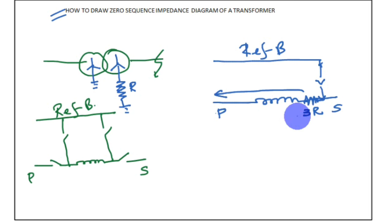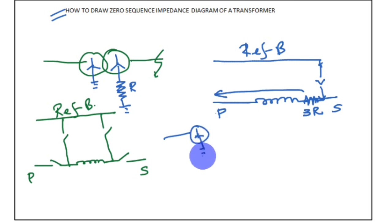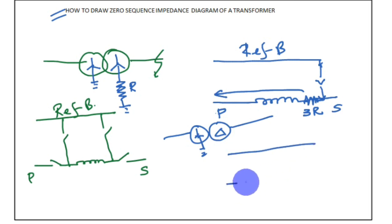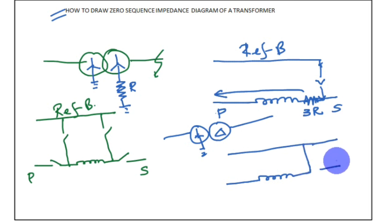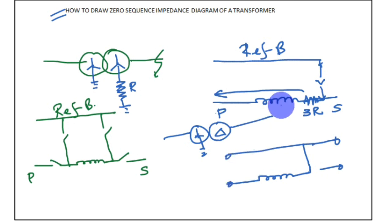Now let's look at a star-delta transformer, where the primary is star with earth and the secondary is delta. The zero sequence diagram for this configuration can be drawn similarly. Using these examples, you can check all combinations of zero sequence diagrams for the different types of transformers used in industry.